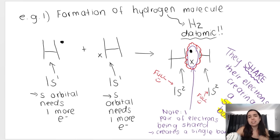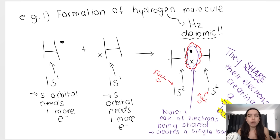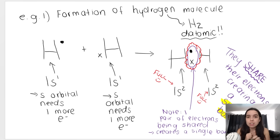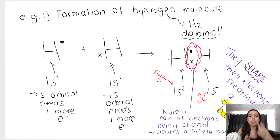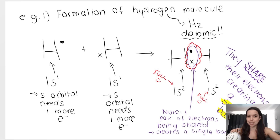So how is a double bond formed? How is a triple bond formed? If two atoms are sharing one pair of electrons, it forms a single bond. If two atoms are sharing two pairs of electrons, it forms a double bond. And if they're sharing three pairs of electrons, it forms a triple bond. So let's jump right into some examples.